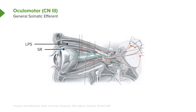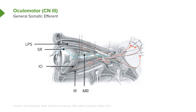This nerve also innervates the superior rectus, shown right in through here, inserting into the sclera of the eyeball. The inferior oblique is innervated as well, and we see the oblique course of this muscle along the side of the eyeball. The inferior rectus is also innervated by the oculomotor, and then we have the medial rectus muscle shown right in through here.